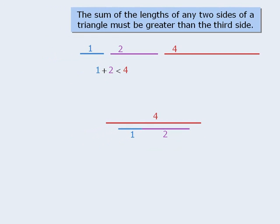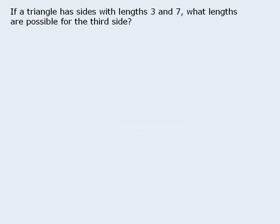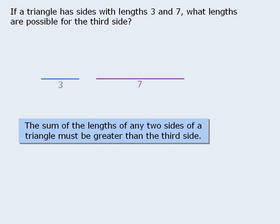Now let's extend this rule into something a little more useful. Let's say that we know the lengths of two sides of a triangle, and we want to find the complete range of possible lengths for the third side. So if the two given lengths are 3 and 7, what is the maximum possible length of the third side, and what is the minimum possible length? When we apply our rule, we can see that the sum of the two given sides must be greater than the third side. In other words, the length of the third side must be less than 10.